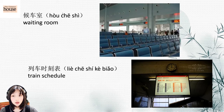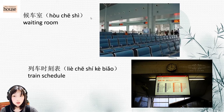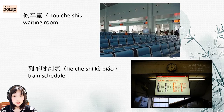And the waiting room: 候车室 (hòu chē shì). In Chinese, it literally means waiting-car-room — the room that you wait for the car. Remember the order: 候 (wait), 车 (car), 室 (room). 候车室.